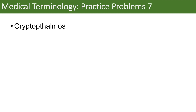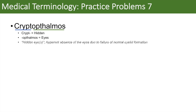The next word is cryptophthalmos. When we break this word down, crypt means hidden, and ophthalmos means eyes. So it simply means hidden eye or hidden eyes. This is actually a condition where there's an apparent absence of the eyes due to failure of normal eyelid formation.